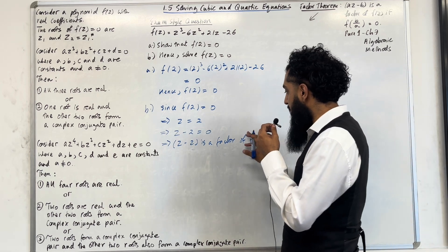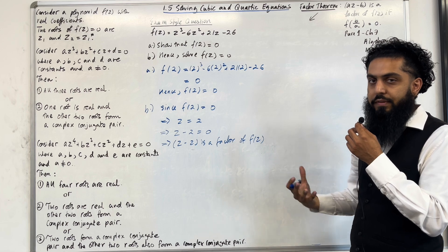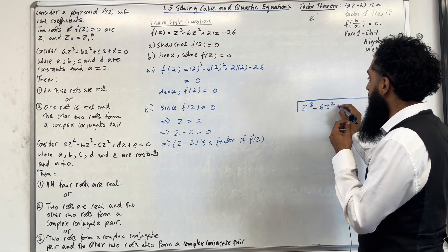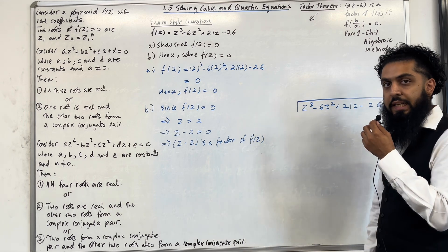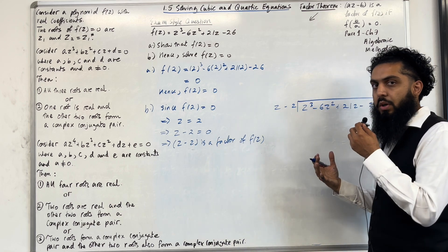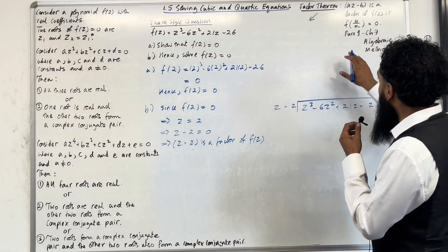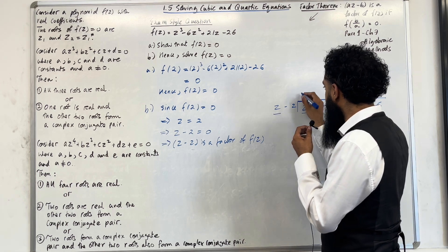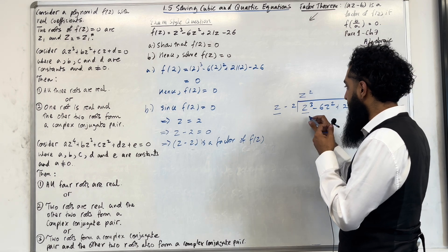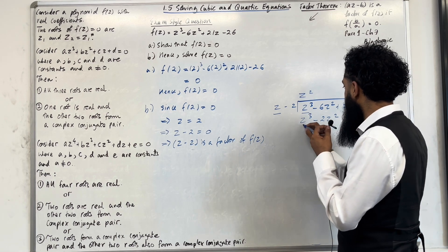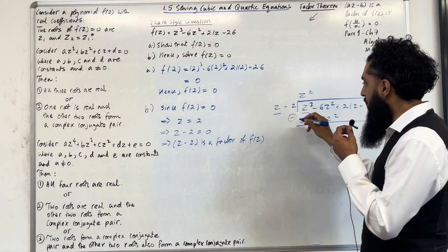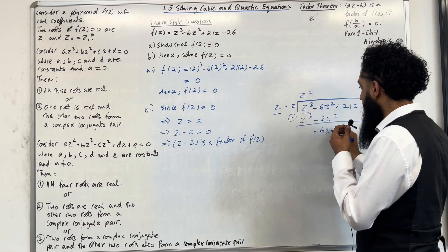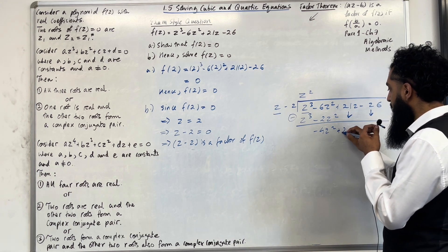We know that z − 2 is a factor of f(z). Now we're going to use polynomial division to find the other factor. I've got z³ − 6z² + 21z − 26 inside, and z − 2 on the outside. Carrying out the division: z³ ÷ z = z². Expanding z² × (z − 2) gives z³ − 2z². Subtracting: −6z² − (−2z²) = −4z². Bringing down the remaining terms: +21z − 26.